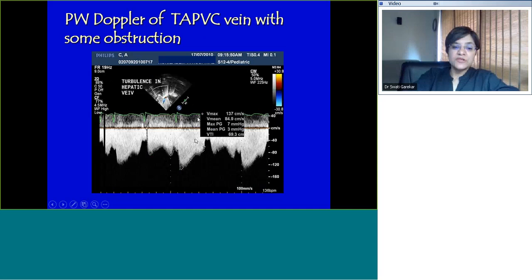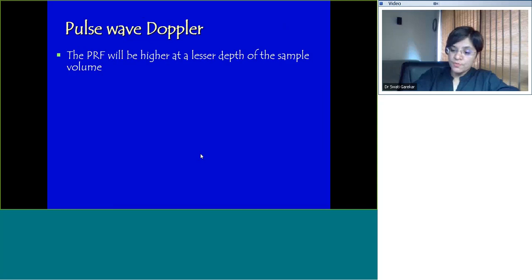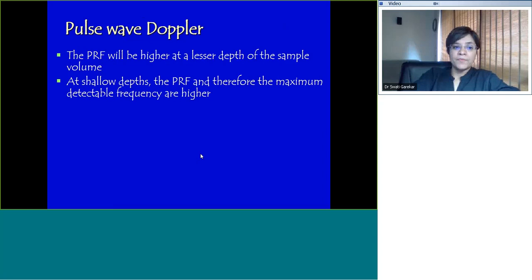Another application of pulse wave Doppler is when you have a total anomalous pulmonary venous connection and there's some obstruction. You want to interrogate that particular point. Go ahead and pulse wave Doppler it and get your numbers. We talked about how short bursts of sound waves are sent, there's a pause and then they come back. That pulse repetition frequency will be higher at a lesser depth of the sample volume. At shallow depths, the pulse repetition frequency and therefore the maximum detectable frequency is higher. This maximum detectable frequency is called the Nyquist limit. The Nyquist limit and the blood flow velocity are related by the Doppler equation.